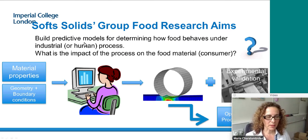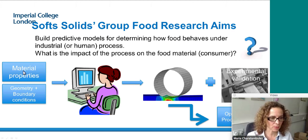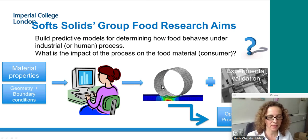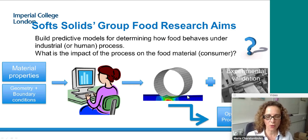If you're going to build a predictive computational model — for example, here I have a case where we produced a model for the sheeting of bread dough — then we need to input material properties for the piece being processed, the geometry such as roll radius, and boundary conditions like rolling speed and gap thickness. Once you have a computational model, you want experiments to validate it, and once you're confident the model is accurate, you can use it to efficiently optimize your process and product design.